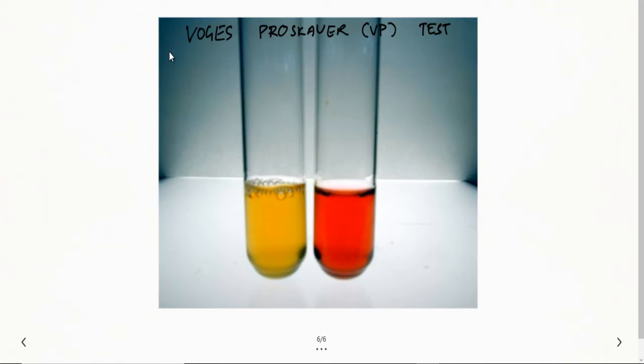Voges-Proskauer test, also known as VP test. For this, we are using a medium which we have used for MR test: glucose phosphate broth, also known as VP broth or MR-VP broth.